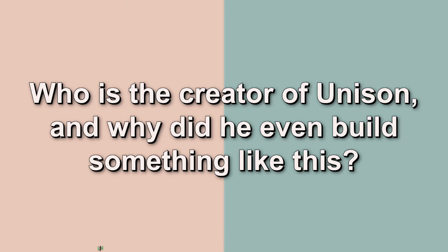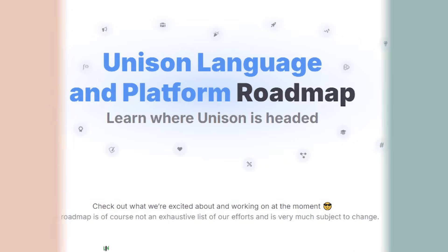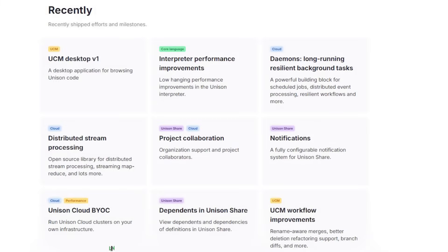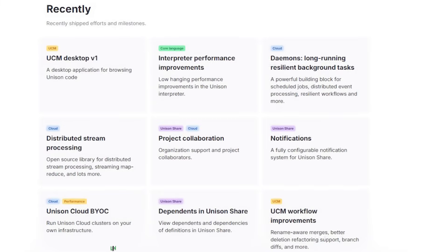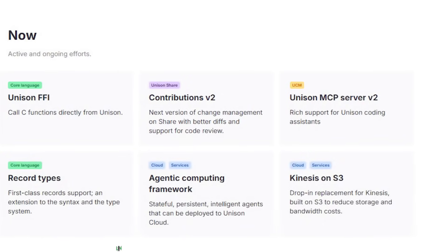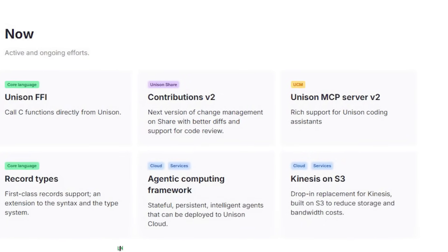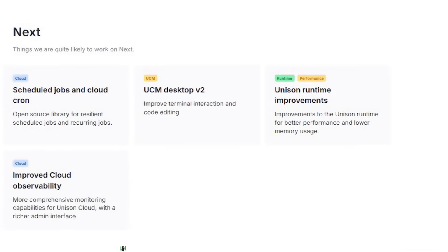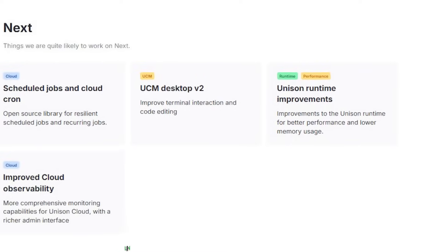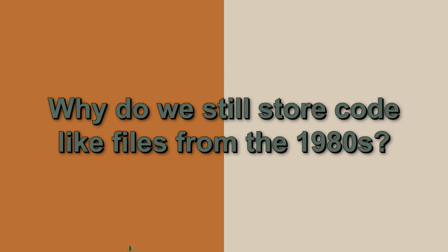Who is the creator of Unison, and why did he build something like this? The main creator is Paul Chiusano, someone who has previously worked on deep concepts of functional programming, distributed systems, and computational models. His core idea started with a simple but dangerous question: why do we still store code like files from the 1980s?